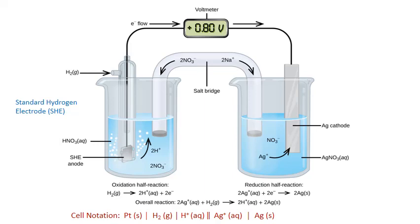We also see two single vertical lines in the anode half of the cell notation. This distinguishes the three separate phases present in this half cell: solid, gas, and solution. The standard hydrogen electrode is an important one to know because it's used to measure the standard half cell potential for a wide variety of oxidation and reduction half reactions.